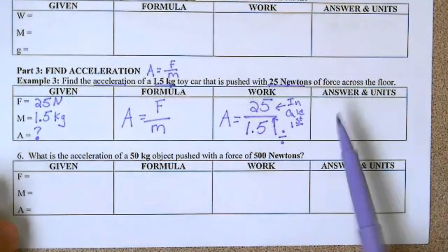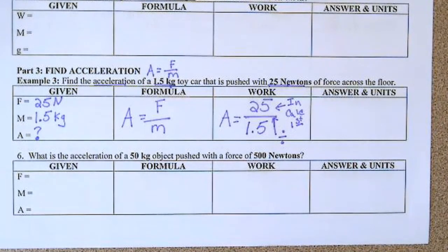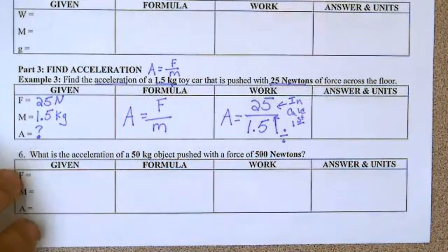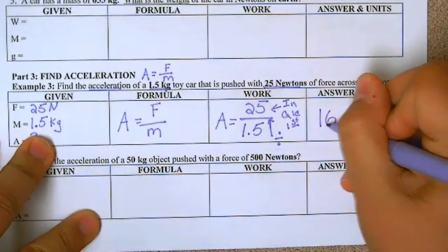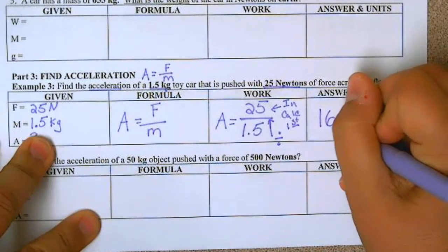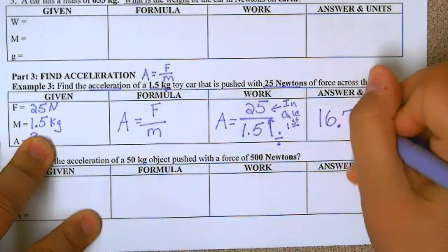So we're doing 25 divided by 1.5 equals, and you're going to get 16.6 repeating. So I'm going to round that up to seven.